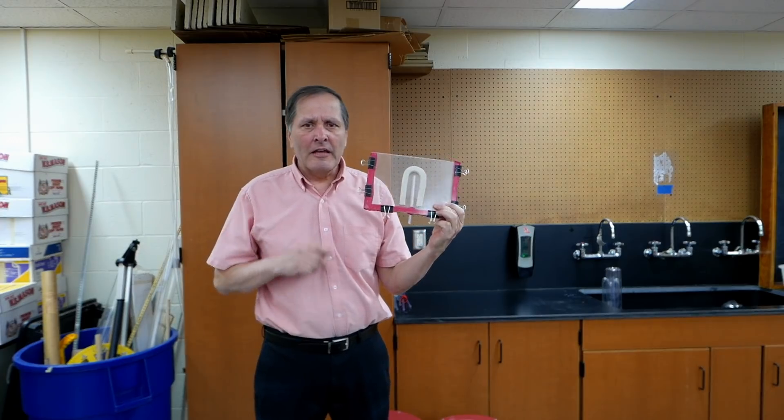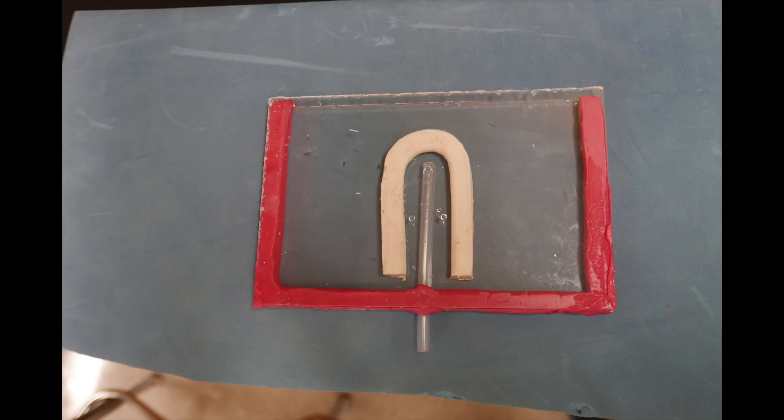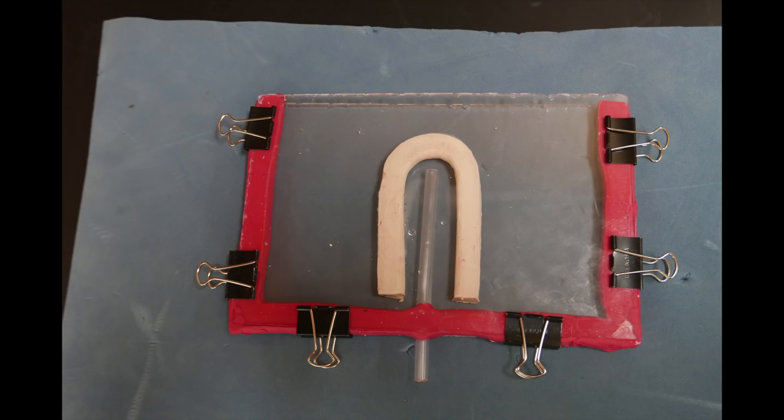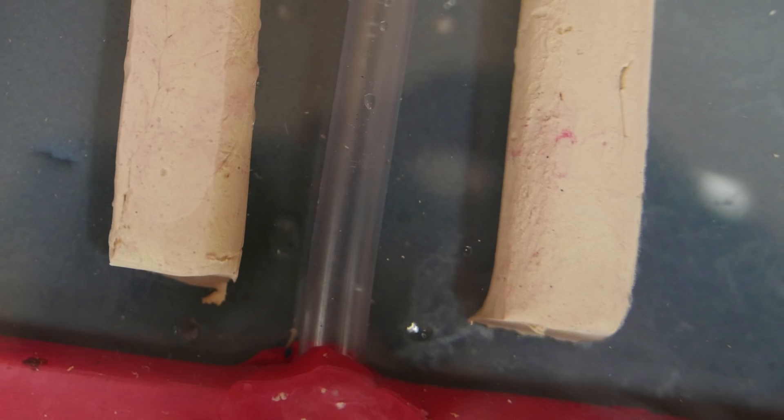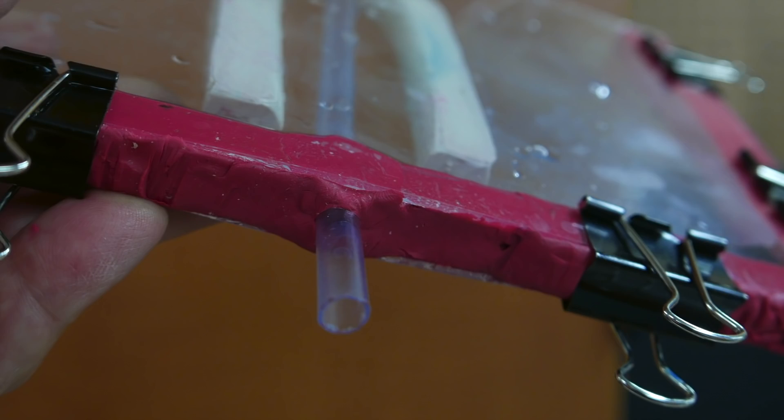Now I have one more example of a bell siphon and this one makes it easy to see how it works. This one I made with red and white clay, a plastic tube all sandwiched between two sheets of plastic. I used six binder clips to hold it together. It's important that there's a gap at the bottom, and also a small gap at the top. The opening is about three quarters of an inch wide, and here's the drain tube coming out the bottom.